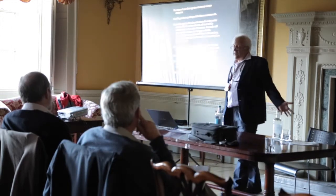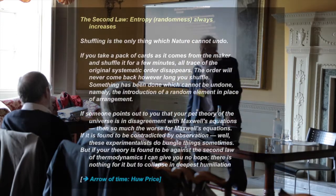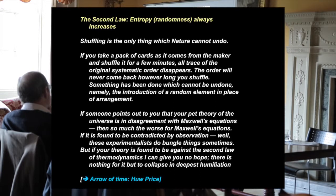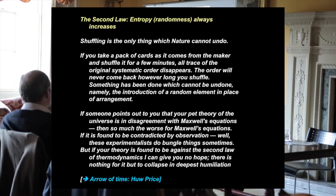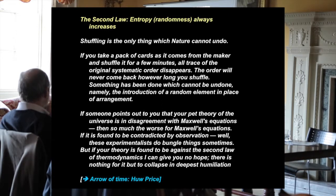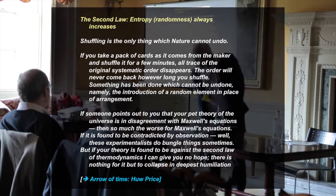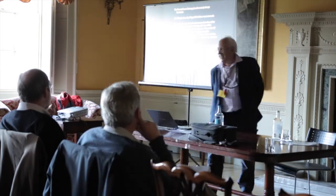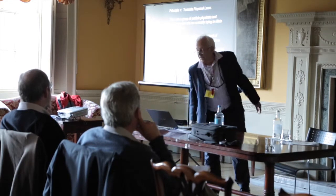One of the wonderful passages here — he emphasizes the second law, which relates to the discussion of time. 'Shuffling is the only thing which nature cannot undo. If you take a pack of cards as it comes from the maker and shuffle it for a few minutes, all trace of the original systematic order disappears. The order will never come back however long you shuffle. Something has been done which cannot be undone, namely the introduction of a random element in place of arrangements.' If someone points out to you that your pet theory of the universe is in disagreement with Maxwell's equations, then it's so much the worse for Maxwell's equations. If it is found to be contrary to observations, well, experimentalists do one good thing sometimes. But if your theory is found to be against the second law of thermodynamics, I can give you no hope. There's nothing for it but to collapse in deepest humiliation.